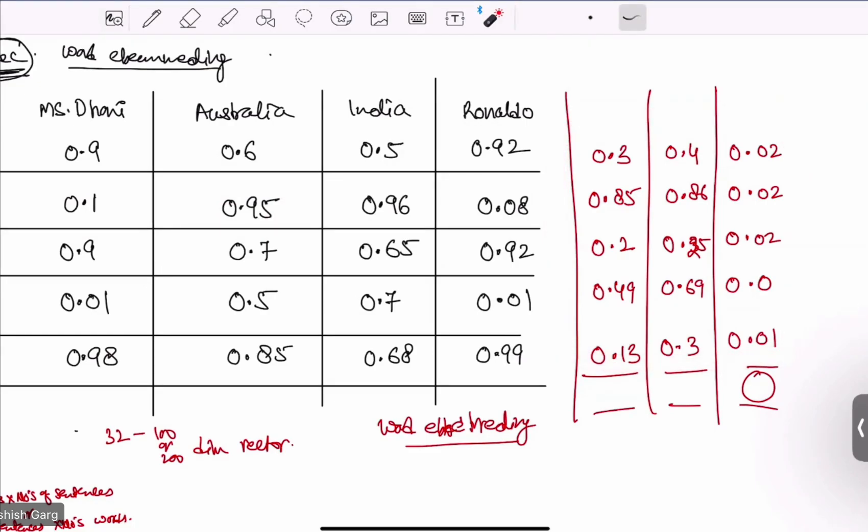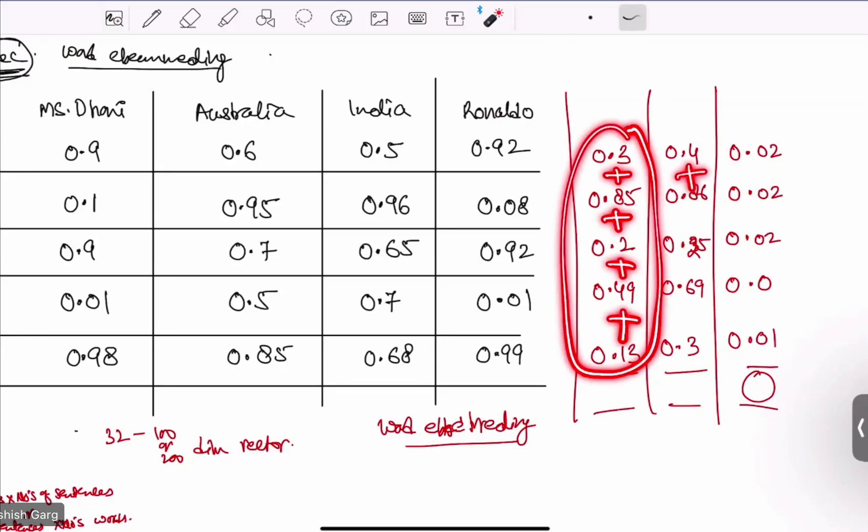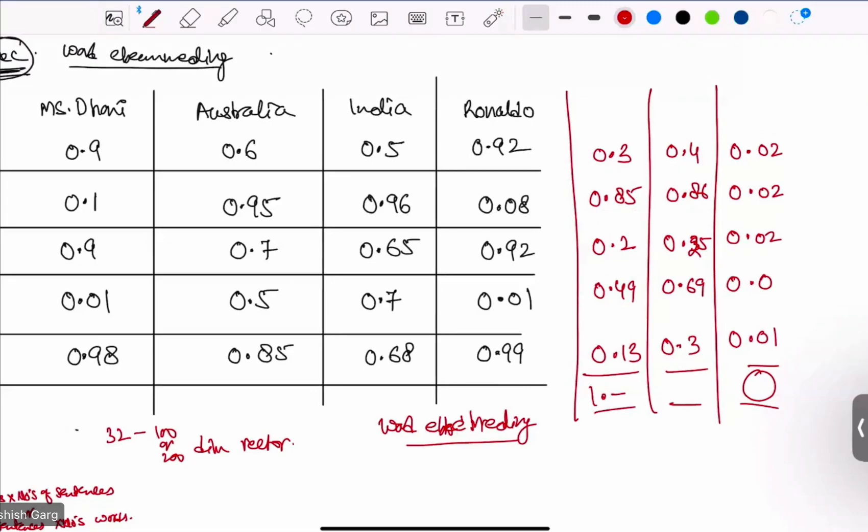And now probably we are finding the sum of all these values. So this value sum is somewhere one point something. For this value, it is one point something. For this value, it is almost near to zero.